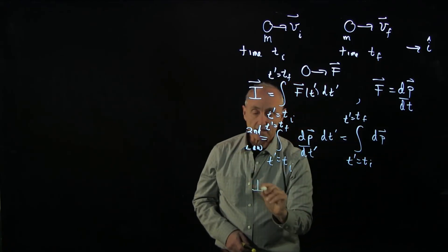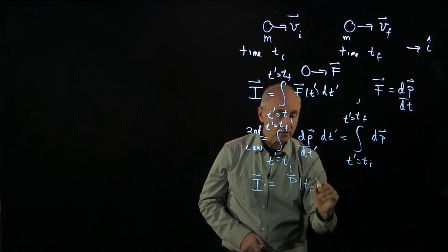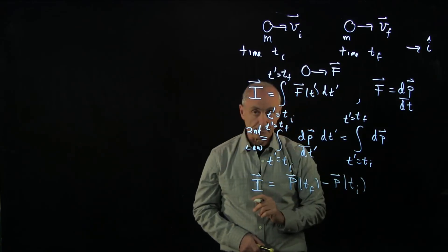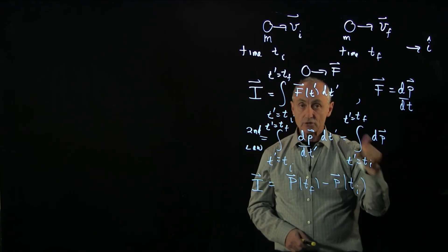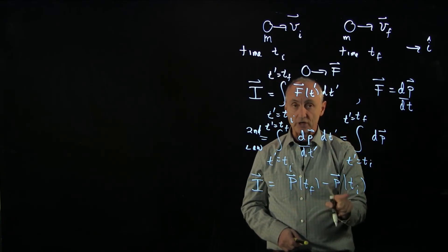And so we end up with impulse is the momentum at t final minus the momentum at t initial. Now, recall, this is a vector integral. But a vector integral is just three separate integrals for each component.